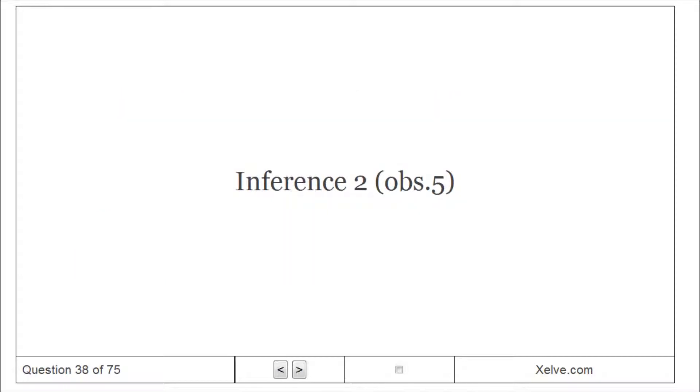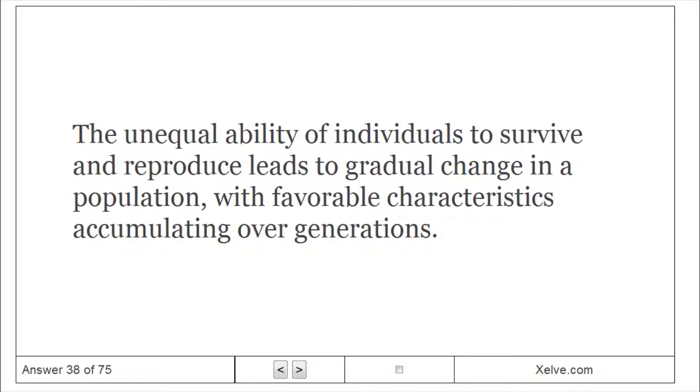Inference 3: The unequal ability of individuals to survive and reproduce leads to gradual change in a population with favorable characteristics accumulating over generations.